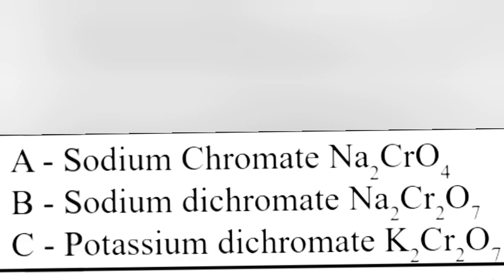B is sodium dichromate, Na₂Cr₂O₇. C is potassium dichromate, K₂Cr₂O₇.